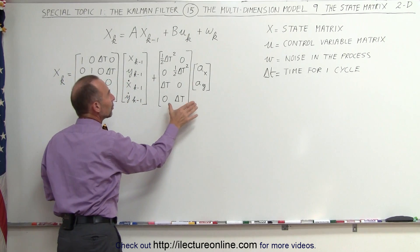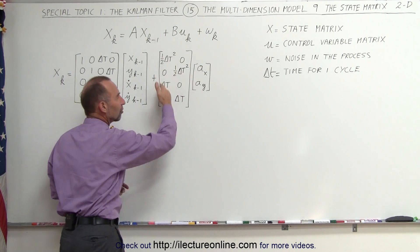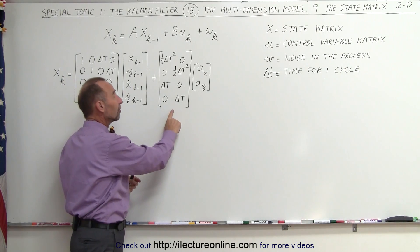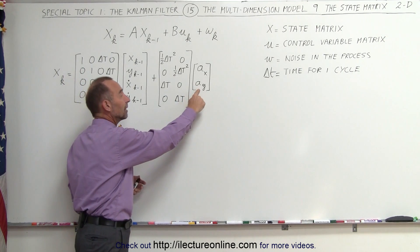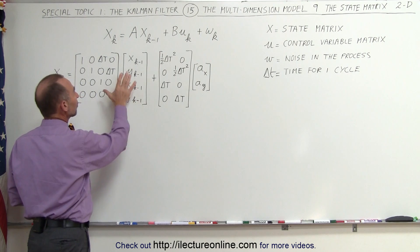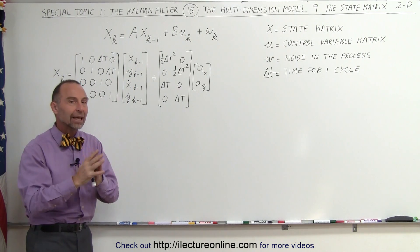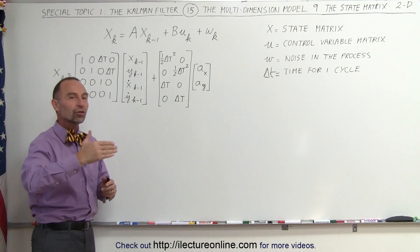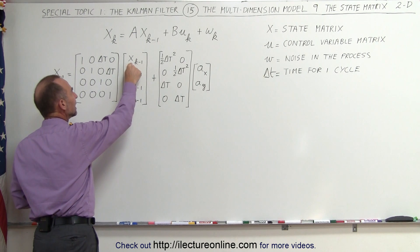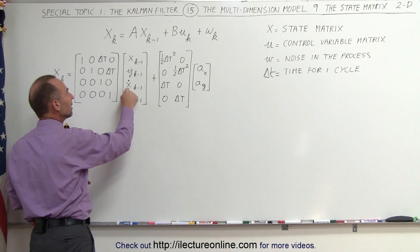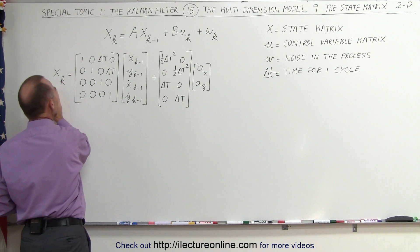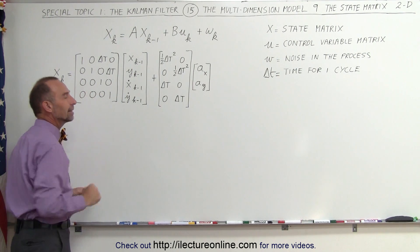And then we're able to add these together. This will adjust the position and the velocity based on the acceleration. This will adjust the position based upon the velocity. If we add them together, we then have all the adjustments necessary to take the position in the x and the y direction and the velocity in the x and the y direction and convert it to the current state, one delta t later.